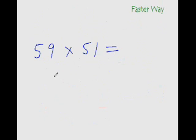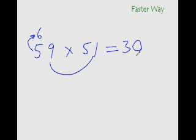What is 59 times 51? The immediately next number after 5 is 6. So 6 times 5 is 30. And 9 times 1 is 9, so put 09 here. That's your answer.